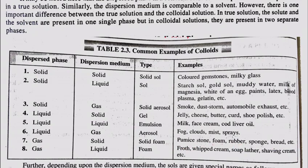Next is foam. Foam is the type in which the dispersed phase is gas and the dispersal medium is liquid. Examples include froth, whipped cream, soap lather, and shaving cream.